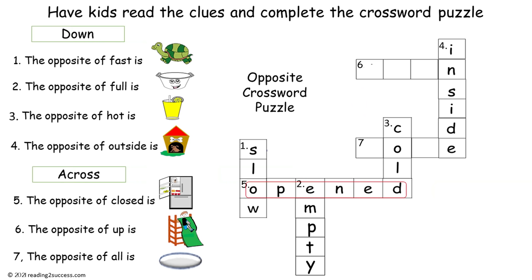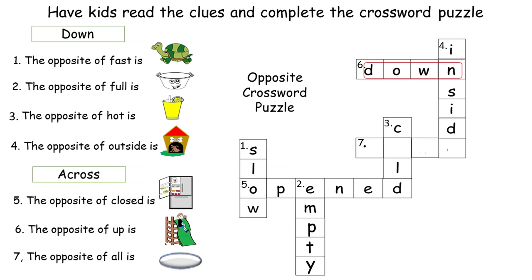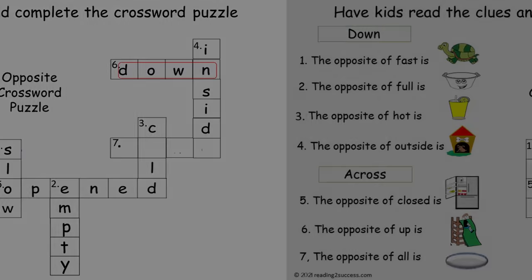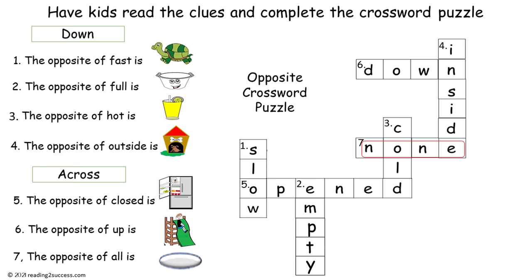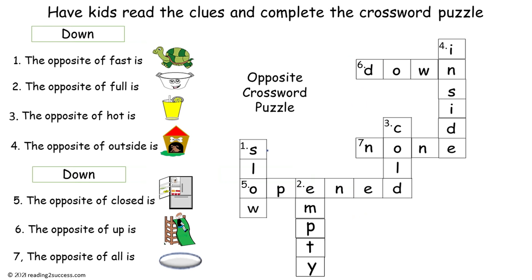Now five across, the opposite of closed, is opened. Six across, the opposite of up, is down. And seven across, the opposite of all, is none. And this is a completed example.